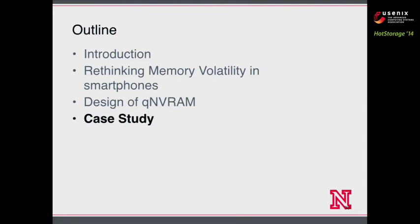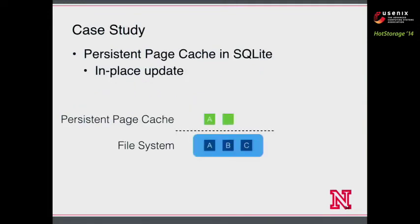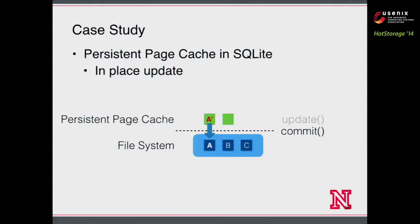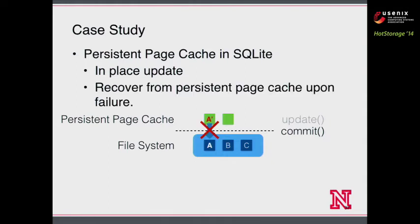Next I will show a case study of QNVRAM. We implement a persistent page cache in SQLite to perform in-place updates. In the persistent page cache, we no longer need a redo log or undo log. When we make changes to the database, we perform the update in-place. If something happens — say the system crashes at that point — we can recover from the persistent page cache because the data is still there.